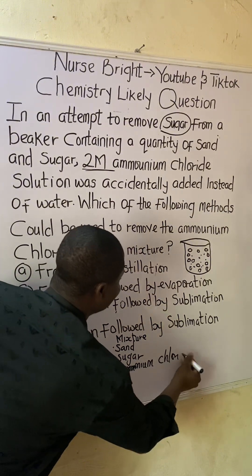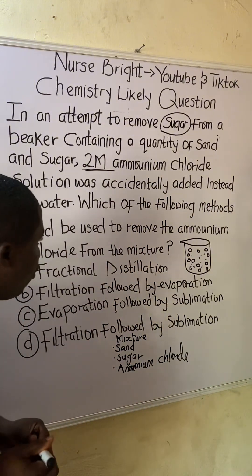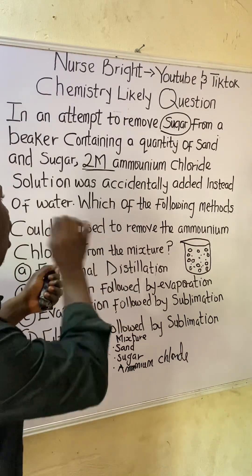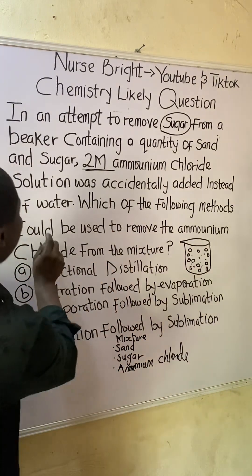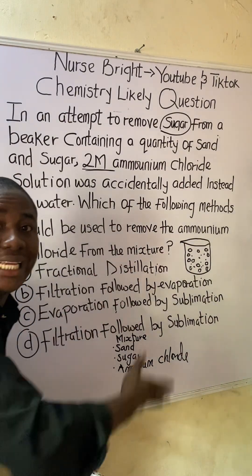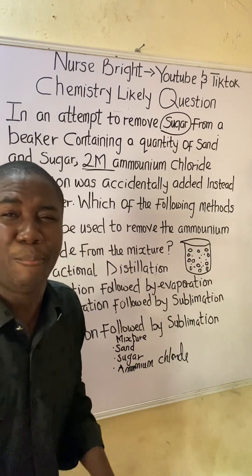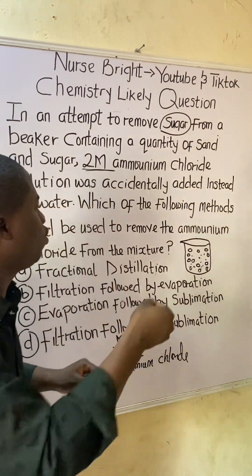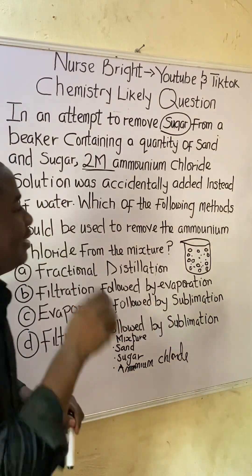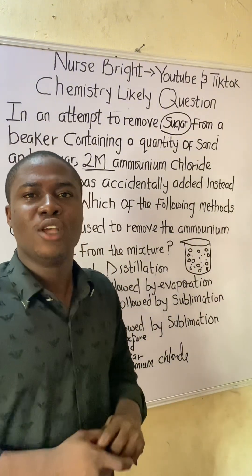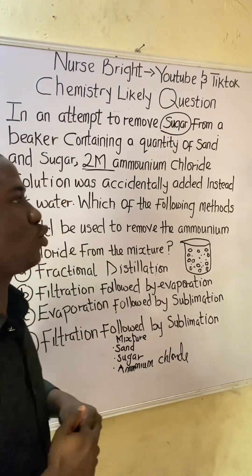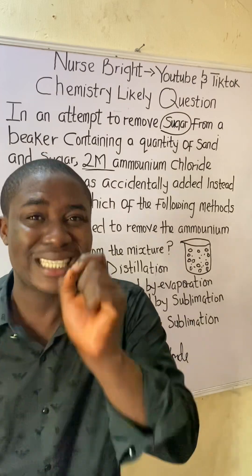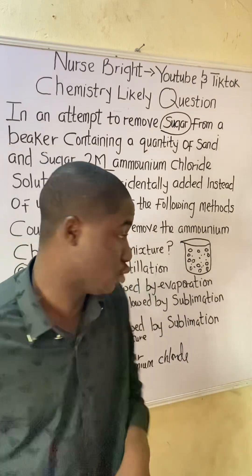The question asks which of the following methods — all of these are called separation techniques — can be used to remove the ammonium chloride. So what do we do first to remove the ammonium chloride? It is actually very easy. Let's analyze the options.